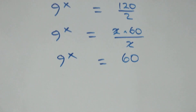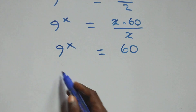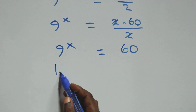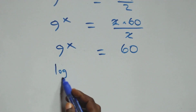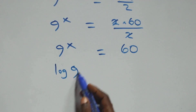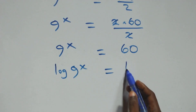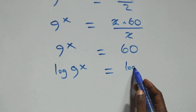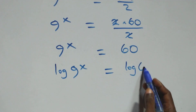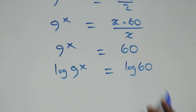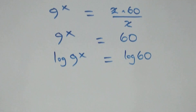The next step we take the log on both sides. So we have log of 9 raised to the power x equals log 60.